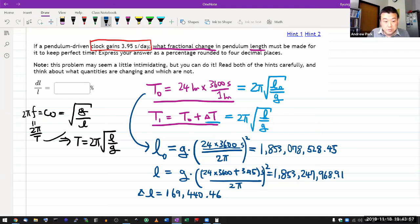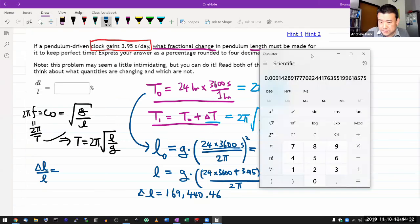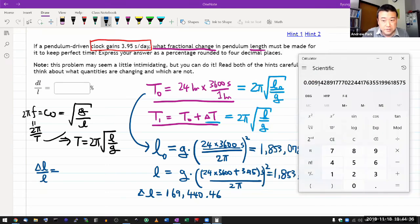All right, so now I can calculate the delta L change in the length divided by L. It shouldn't matter, but I'm just going to use L instead of L naught. So take this delta L and divide it by 1853247968.91. It's in fractions, so multiply by 100 to get percentage value. Oh, it says round to four decimal places. So that's actually not that high of a precision, so I think I'm going to be fine. So what the answer is 0.0091. That's four decimal places.